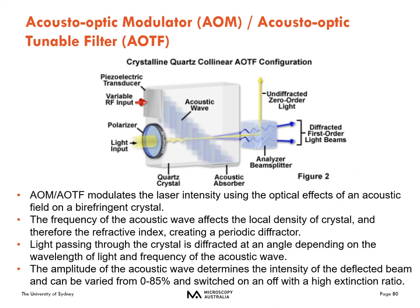We typically prefer to use an Acousto-Optic Modulator or Acousto-Optic Tunable Filter. An AOM adjusts laser intensity using the optical effects of an acoustic field on a birefringent crystal. By inputting radiofrequency waves onto the birefringent crystal, we affect the local density and therefore the refractive index. Light passing through the crystal is diffracted at an angle depending on the wavelength of light and the frequency of the acoustic wave. The amplitude of this acoustic wave determines the intensity of the deflected beam and can be varied between 0 and 85 percent. You can basically switch your laser on and off very quickly — this works very well for beam blanking. Maybe you only need 10 percent of that full laser power, so you can turn it on at 10 percent.